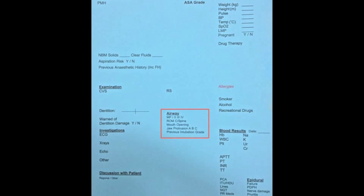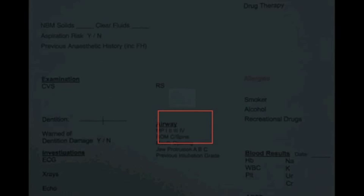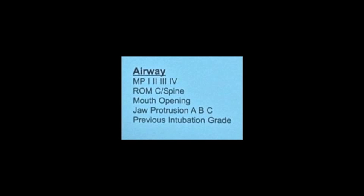Consideration of the airway is also vital before starting the anaesthetic. There are reminders shown on this chart which can help identify the difficult airway. Mallampati score, neck movement, mouth opening and jaw protrusion are commonly used. Think about whether mask ventilation may be a problem, or whether intubation will be the problem, or maybe both will be difficult. Airway assessment is a good topic of discussion when you're in theatres.